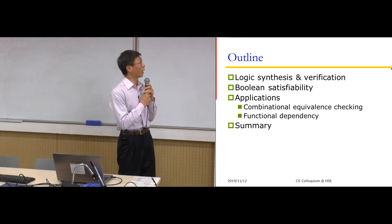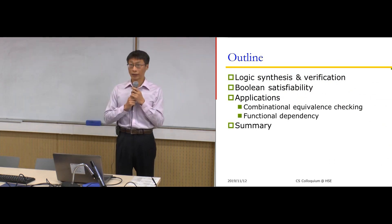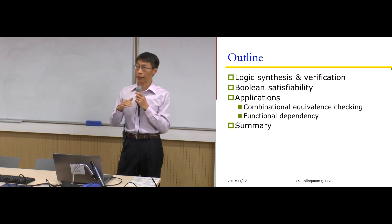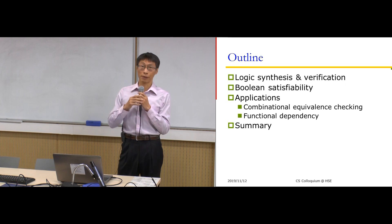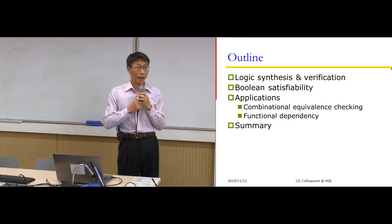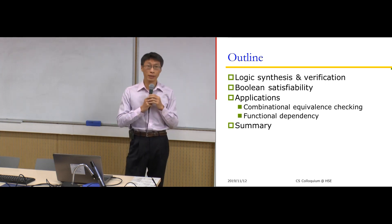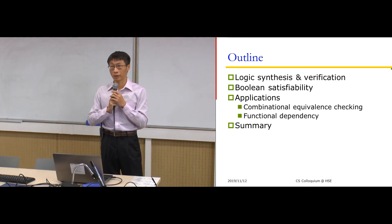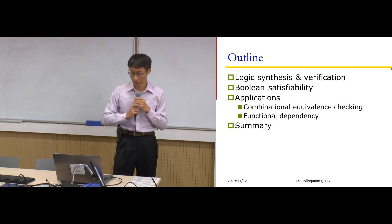For the outline, first I will give a quick motivation for why we look at Boolean Satisfiability in the domain of electronic design automation. Then I will quickly introduce Boolean Satisfiability, and show two examples of its application. Then I will try to summarize this talk.